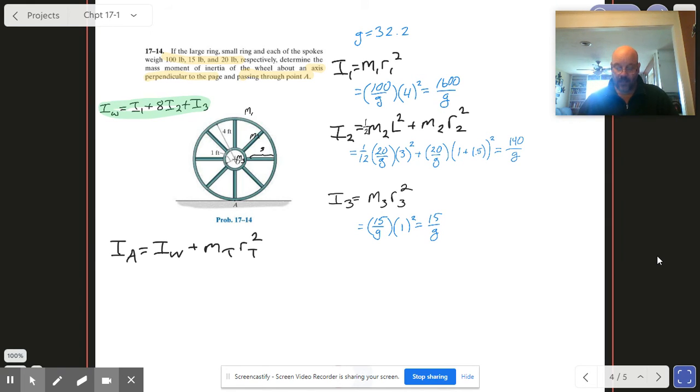Okay, so to package it all together and get the actual moment of inertia about the center of the wheel, we just get all of our parts and put in our numbers. So we've got the 1600 over g plus 8 of the second one, 140 over g, plus the very last one which is 15 over g. And again I calculated this earlier and got 2735 over g.